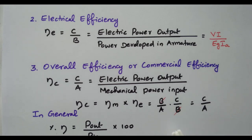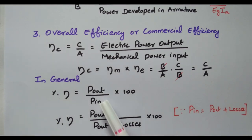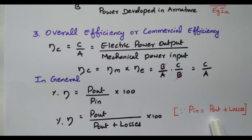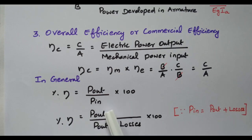So we can calculate three different efficiencies: mechanical efficiency, electrical efficiency, and the overall or commercial efficiency. In general, efficiency refers to power output divided by power input, multiplied by 100, to give the percentage efficiency. The input power is nothing but output power plus losses. So we can replace P_in as P_out plus losses. Therefore, the general efficiency formula is: power output divided by (power output plus losses), multiplied by 100.